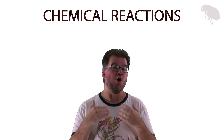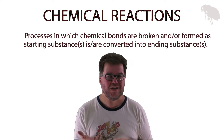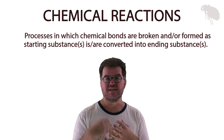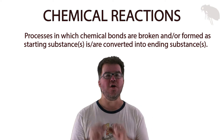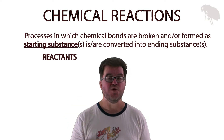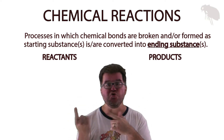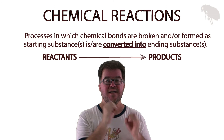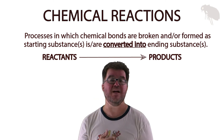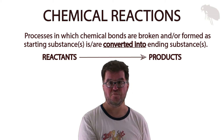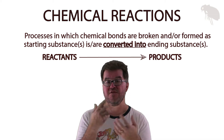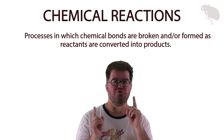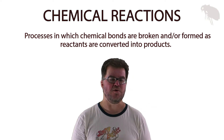Chemical reactions are processes in which chemical bonds are broken and formed. We have a starting substance that is converted into an ending substance through this process of breaking and forming chemical bonds. We call the starting substances reactants and the ending substances products. It's always written with an arrow because the arrow indicates transition or transformation — the reactants become the products through the breaking and forming of chemical bonds.